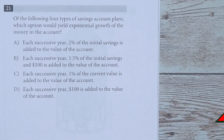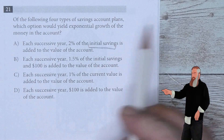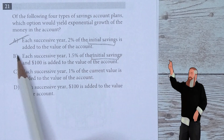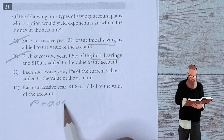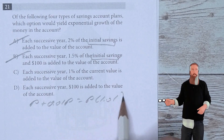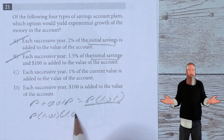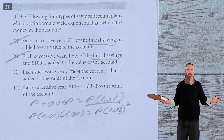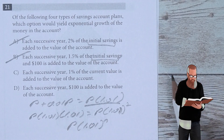Of the following four types of savings account plans, which option would yield exponential growth of the money in the account? Each successive year, 2% of the initial savings is added — because we're staying on the initial savings, we're not really dealing with exponential growth. Each successive year, 1.5% of the initial savings — once again, can't be that. Really has to make you think about what's going on with exponential growth, where you would have P times 1.01 as year 1, P times 1.01 squared as year 2, and so on — compounding interest, exponential growth. You have to have that exponent.